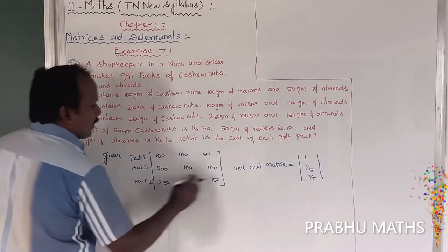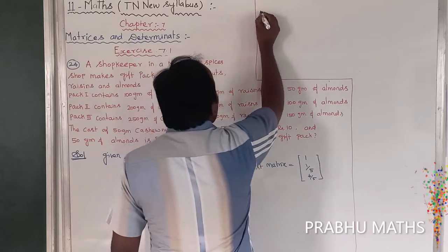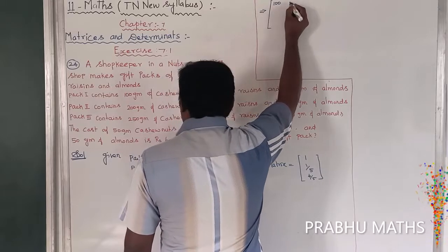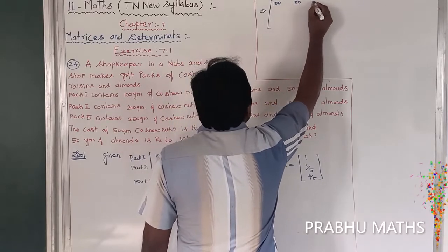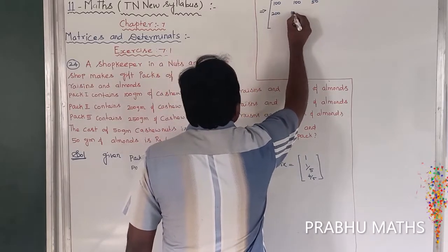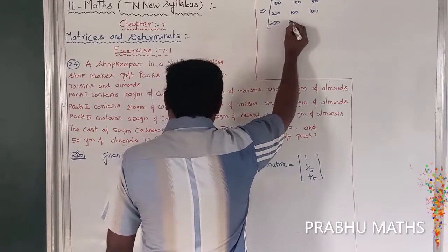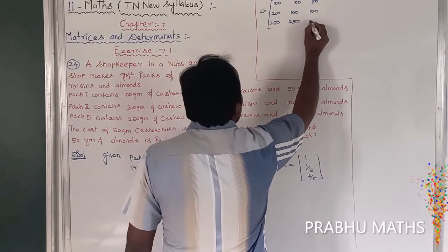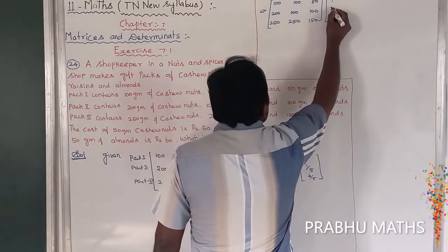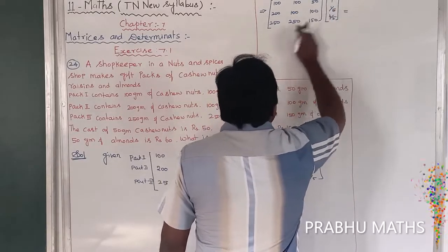The first matrix is: row 1 — 100, 100, 50; row 2 — 200, 100, 100; row 3 — 250, 250, 150. The rate matrix is: 1, 1 by 5, and 6 by 5. We multiply these two matrices to get the cost for each packet.